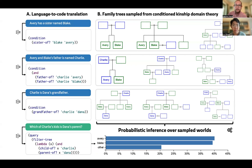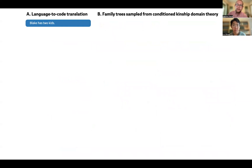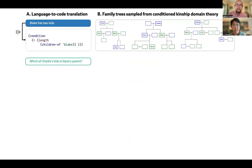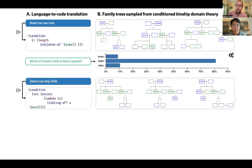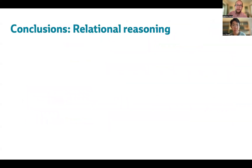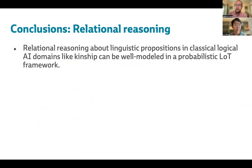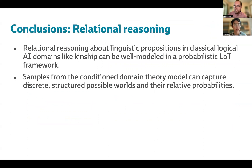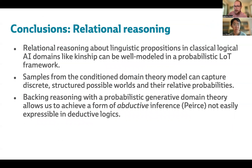To hammer home the point, we consider additional observations. If we're told that Blake has two kids, intuitively the probability that it's Blake significantly increases. However, if we're also told that Dana is an only child, this is inconsistent with Blake being the parent, so the probability drops to zero. Note how in this last reasoning step we've made a deductive inference, but it fell naturally out of our probabilistic framing. To wrap up, we've illustrated how a classic example of relational reasoning can be well modeled in the PLoT — possible worlds can be composed of discrete random variables with complex structures, and backing reasoning with a generative model has allowed us to achieve abductive reasoning from language that freely intermixes deductive and inductive inferences.